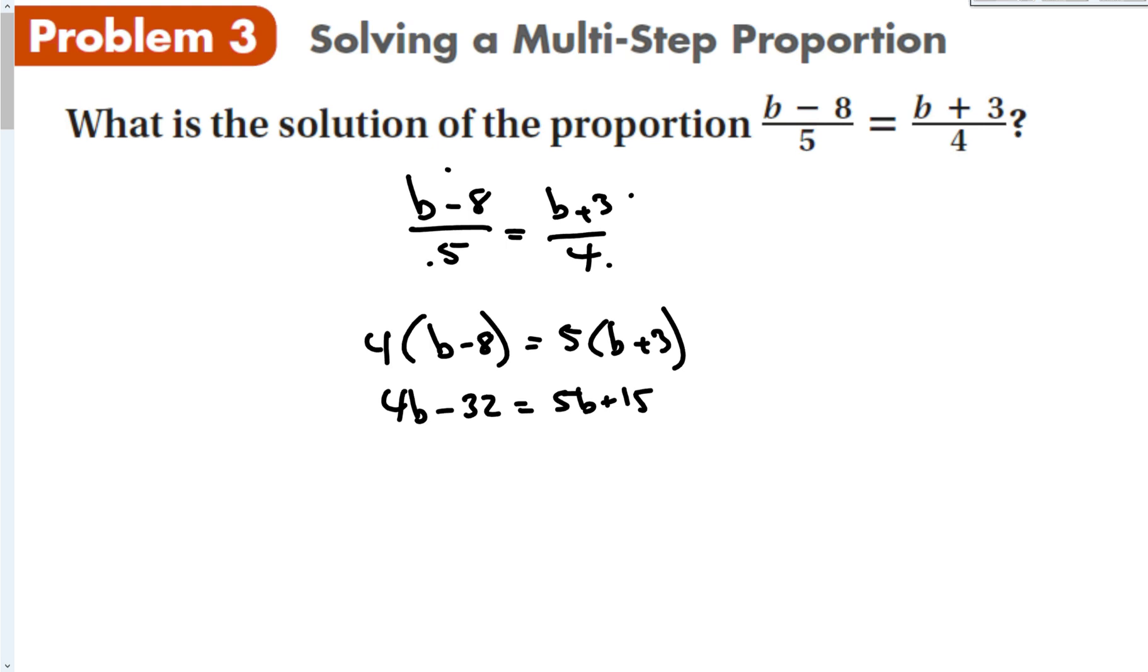Now we have an equation with variables on both sides. If you remember back to the previous lessons, we should always try to keep my variable positive. So I want to bring the smaller one to the bigger one. I'm going to subtract 4b from both sides. That gives me negative 32 is equal to b plus 15. Then subtract out the 15 to isolate the variable. And I get negative 47 is equal to b. Tough to double check yourself here because we're plugging it back into the equation. We're not solving for the answer on the top. All we're doing is solving for b in this case.